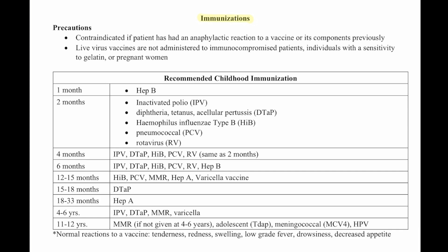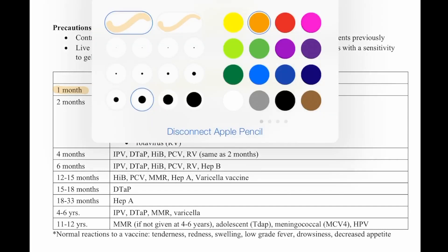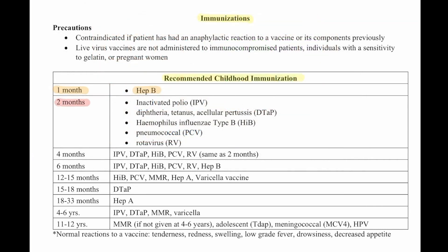Here is a chart of the recommended childhood immunizations. At one month, they'll get a hepatitis B. At two months, they'll get an inactivated polio, a diphtheria, tetanus, and pertussis (DTaP), an influenza type B, pneumococcal, and rotavirus.